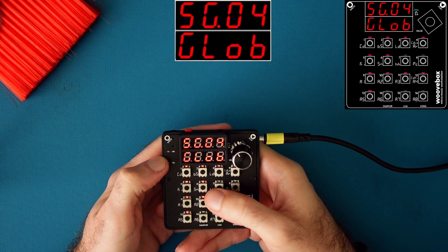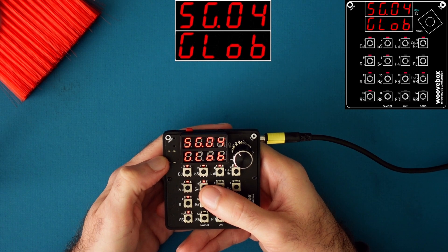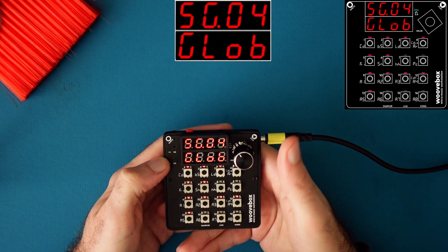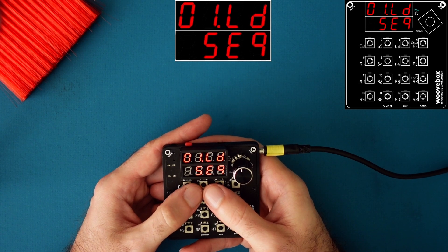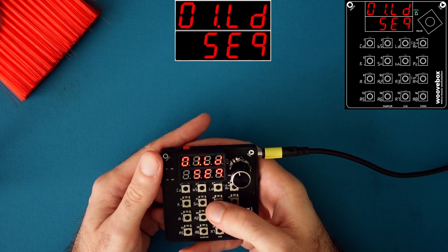So this feature only goes back one save. So if you save twice, you will not be able to get your track back. The undo feature can come in really handy when you are working with longer patterns. So here, I'm going to record a four bar pattern.